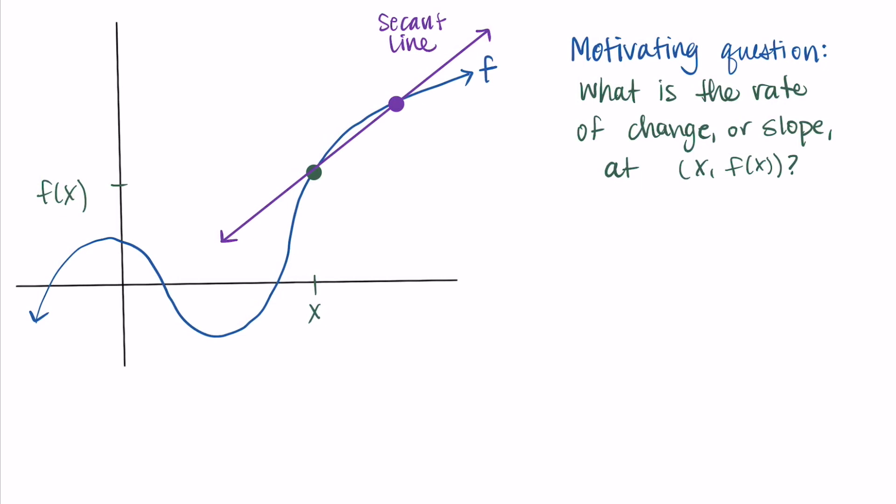So this line we've drawn here is called a secant line. So the word secant actually comes from a Latin word that means to cut, so that's a nice way to remember it. It's kind of cutting through the function. We are just taking two points and finding a line through them.